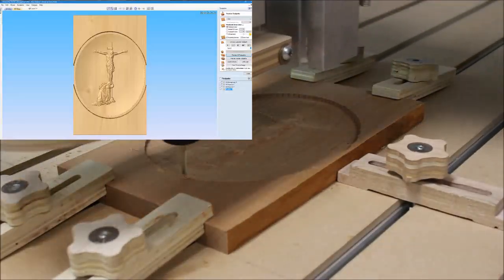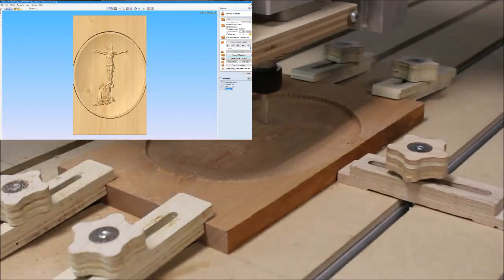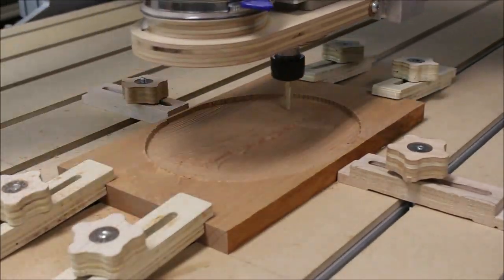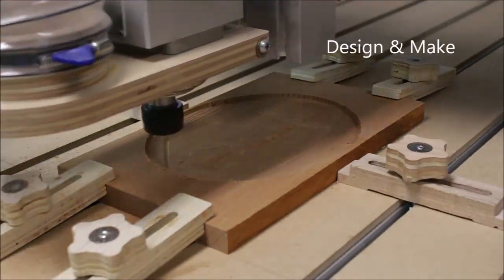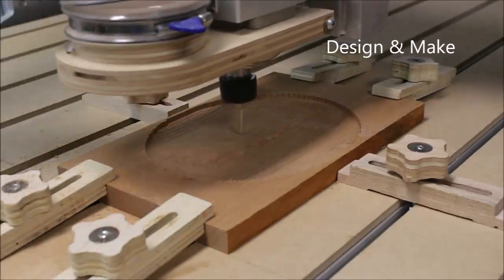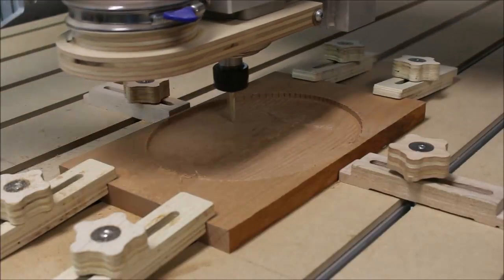The 3D design that I'm carving is purchased from Design and Make. You can get to them through the Vectric software—there's a direct link through there—or you can just Google Design and Make. They have lots of 3D models to choose from.